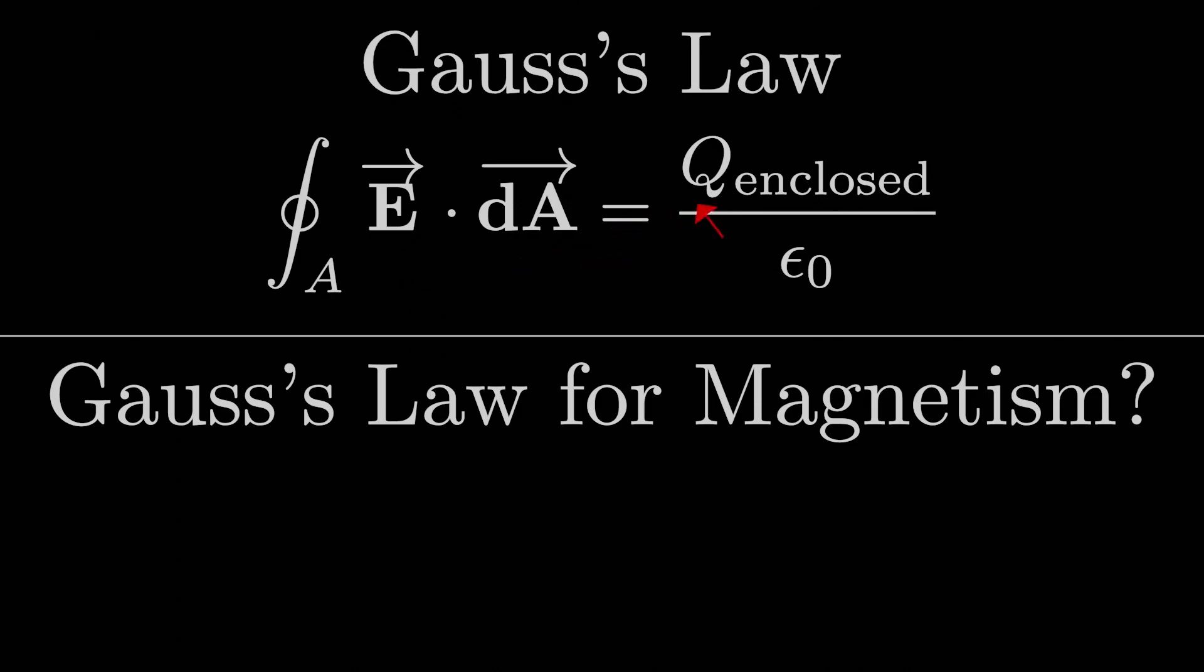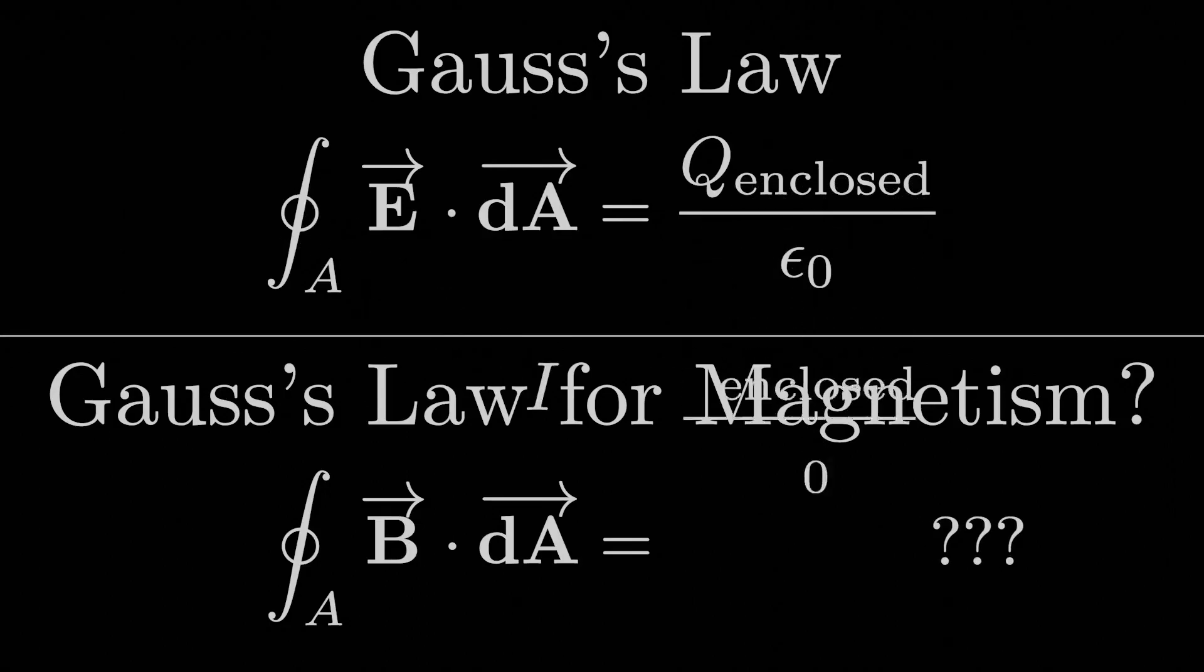We remember Gauss's law just stated that if we know the surface integral of E dot dA through any closed surface, it's equal to the charge that the surface encloses divided by epsilon naught. So what might the closed surface integral of B dot dA be? We have the electric flux as q enclosed over epsilon naught, maybe this one is something like the current enclosed over mu naught, something like that.